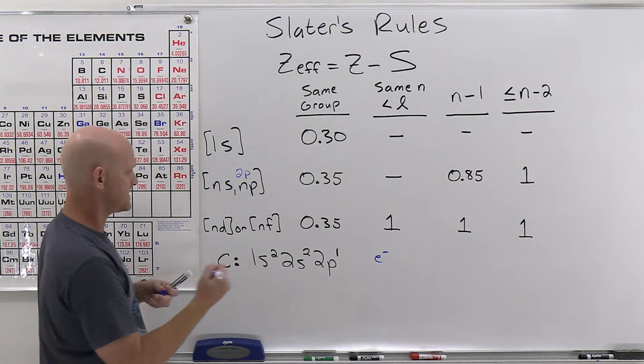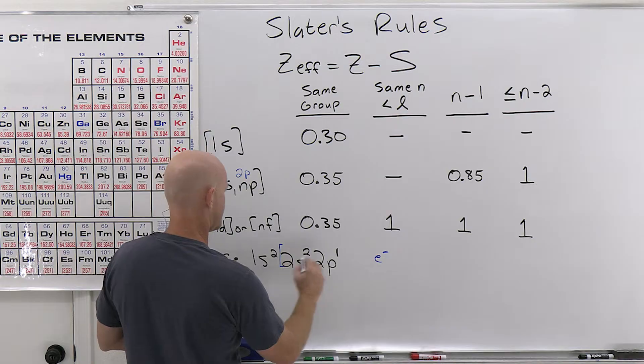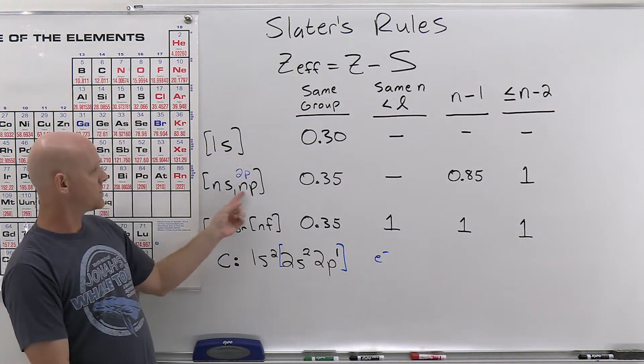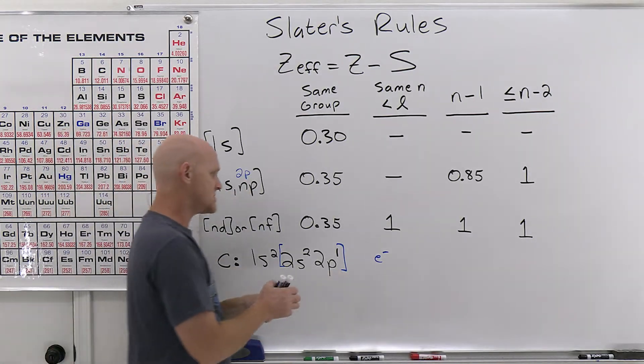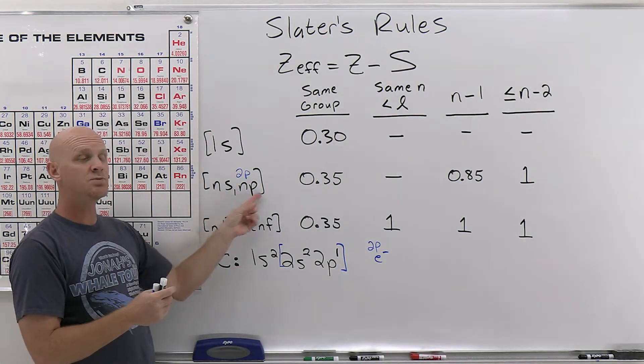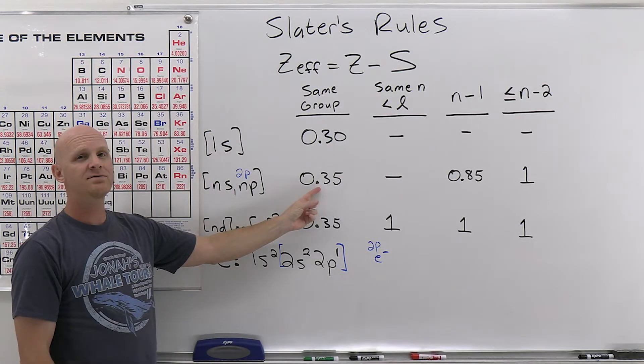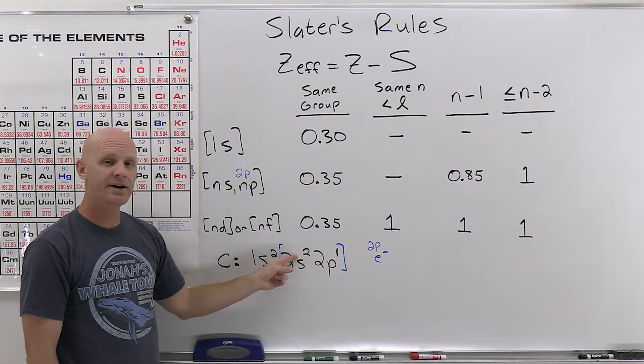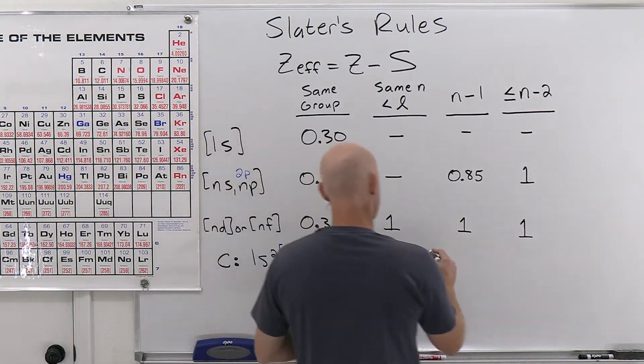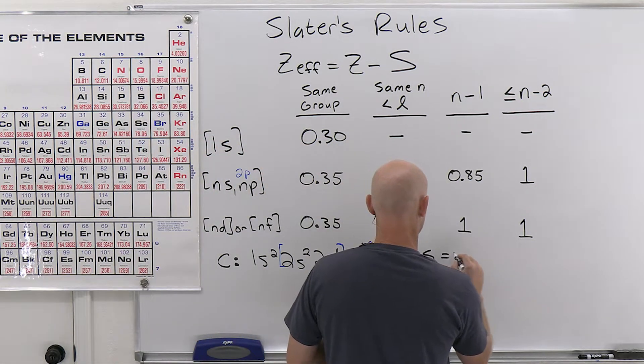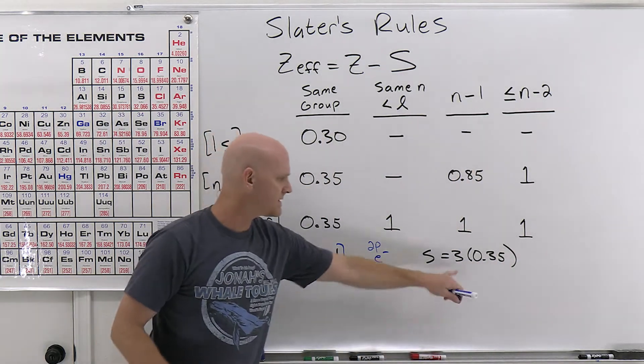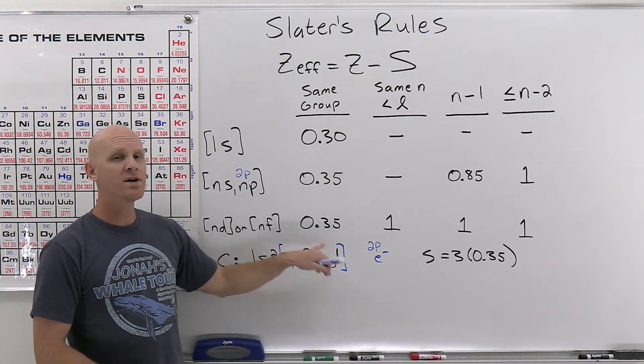So the way this works then is you want to group all the s and p's of a given shell together in your electron configuration here because those get grouped together according to Slater's rules. And so for this 2p electron, and let's highlight that he's a 2p electron, anybody else that's in the 2s or 2p is going to screen him by a value of 0.35. Well, we've got a total of three electrons in that same group, if you will, and so that's going to be 3 times 0.35. And so for our screening constant, those three electrons contribute 0.35 each.